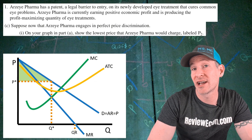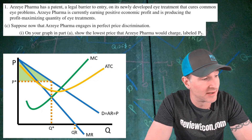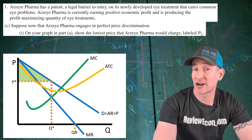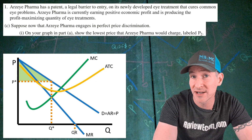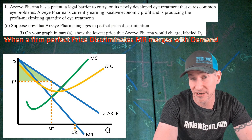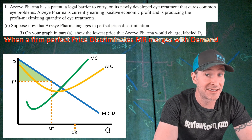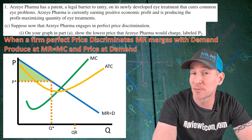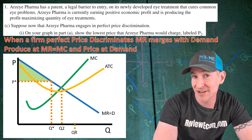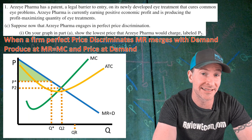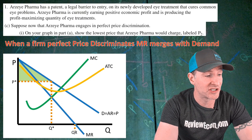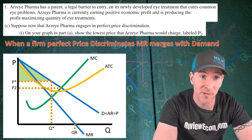For part C-I, we are told that Arzai Pharma engages in perfect price discrimination, and we need to find the lowest price they would charge and label it P2. When a monopoly perfectly price discriminates, the marginal revenue curve disappears and merges with the demand curve. The firm still produces at MR equals MC and prices at the demand curve. That gives us quantity Q2, and we head over to the y-axis and label that P2 — which on our original graph is the intersection of MC and demand.